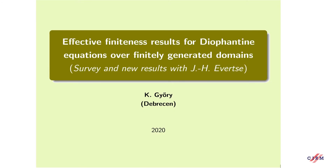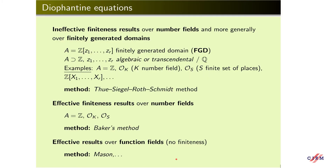Let me start with a short introduction. There is an extremely rich literature of finiteness results for different equations over number fields and more generally over finitely generated domains, that is over domains of this form, where we assume that A contains Z and the generators are algebraic or transcendental elements over Q.